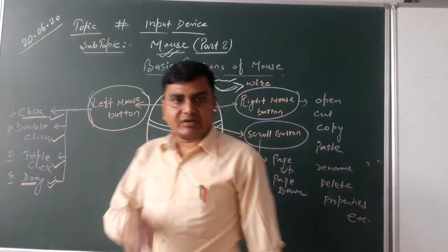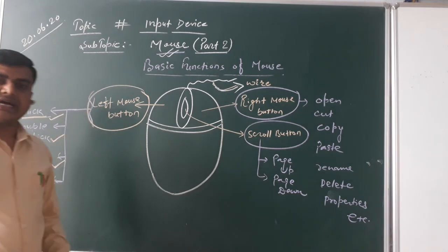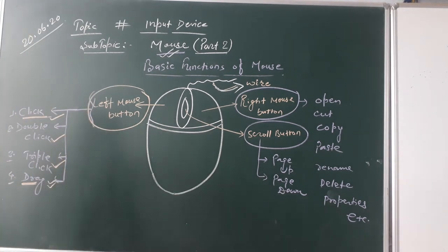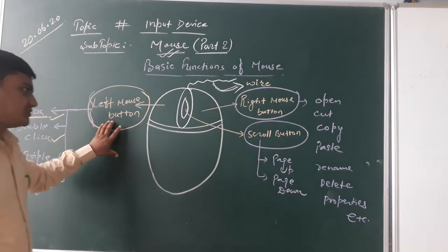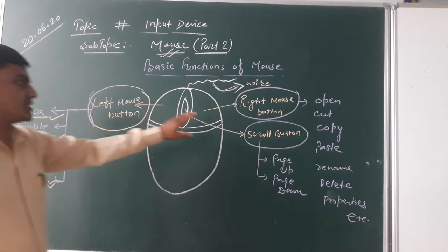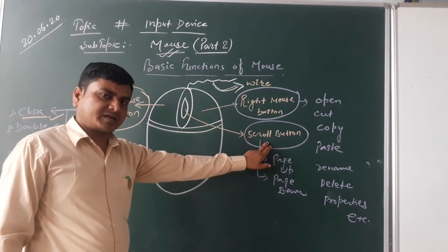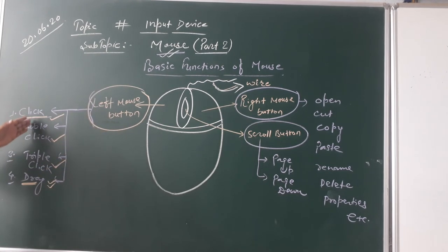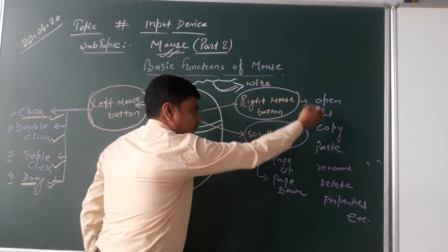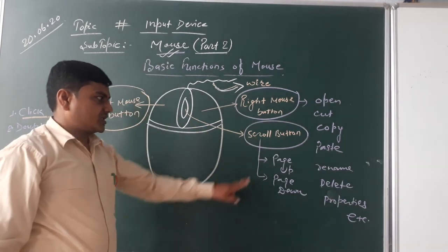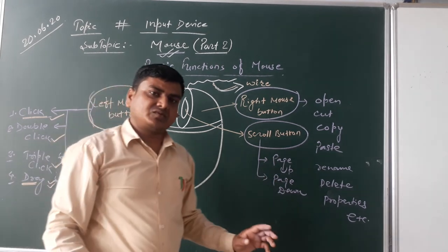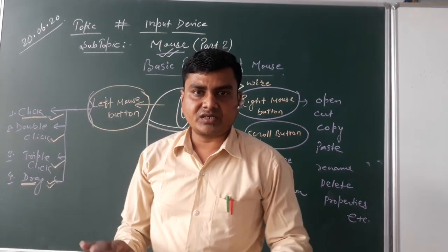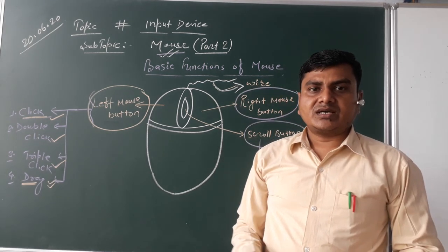That's all for this video. To recap: today we covered the basic structure and basic functions of mouse. Inside the left mouse button functions we discussed click, double click, triple click, and drag. Inside the right mouse button functions we discussed copy, paste, delete, and properties. We also discussed the scroll button and its use for page up and page down. I hope you understood the basic functions and basic structure of mouse. Have a good day.